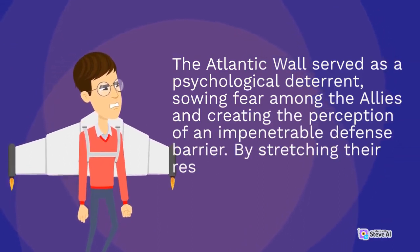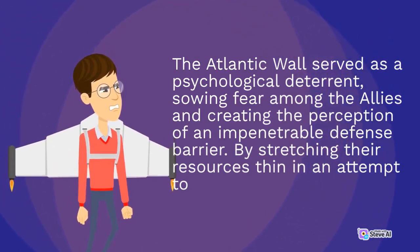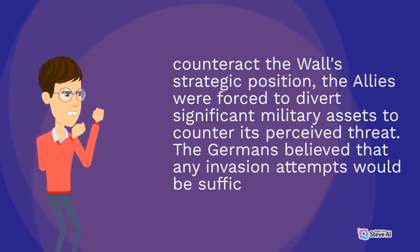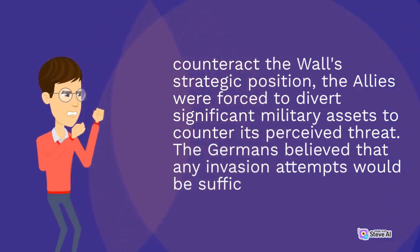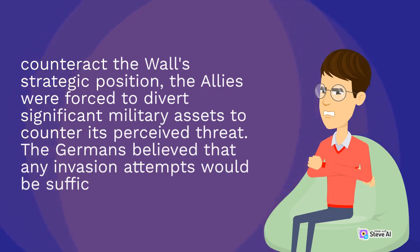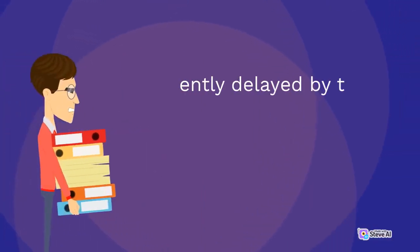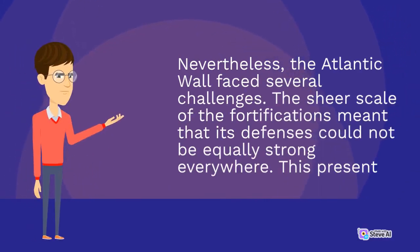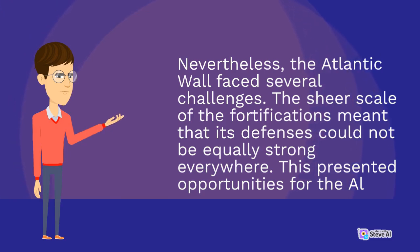The Atlantic Wall served as a psychological deterrent, sowing fear among the Allies and creating the perception of an impenetrable defense barrier. By stretching their resources thin, the Allies were forced to divert significant military assets to counter its perceived threat. The Germans believed that any invasion attempts would be suffocated and delayed by the wall, allowing for counterattacks and the eventual defeat of the invaders. Nevertheless, the Atlantic Wall faced several challenges. The sheer scale of the fortifications meant that its defenses could not be equally strong everywhere, presenting opportunities for the Allies to identify and exploit weak points.